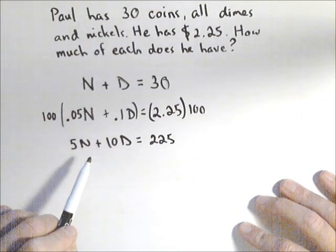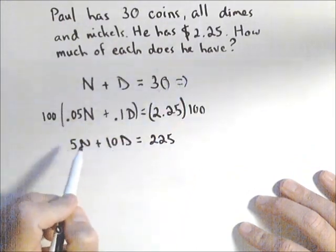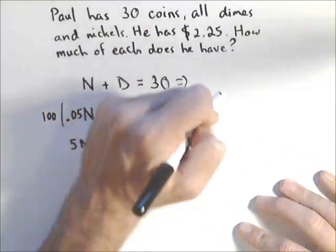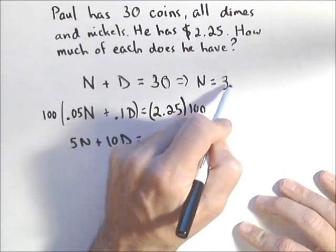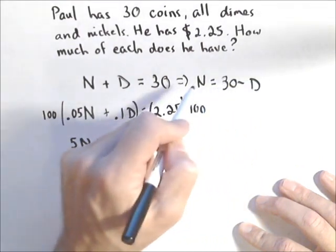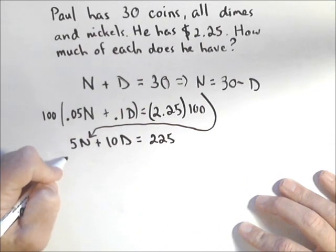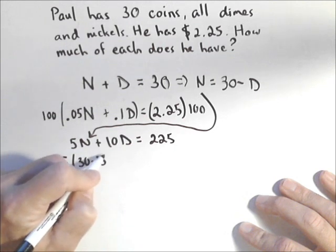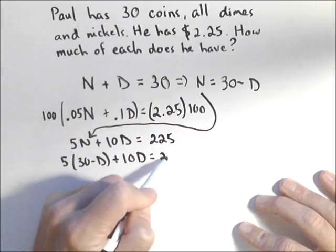And this actually isn't too bad of a system to solve. In fact, let's do it real quick with substitution. So let's solve for N. I know that N equals 30 minus D, and I'm going to plug that in for N, hence the substitution. So I have 5 times 30 minus D plus 10D equals 225.